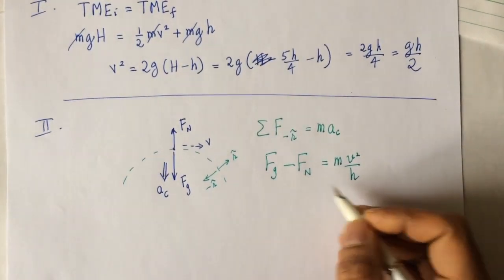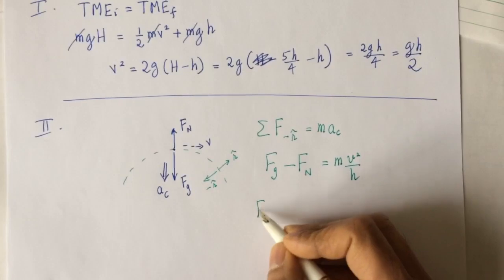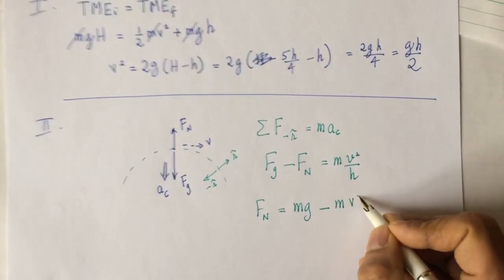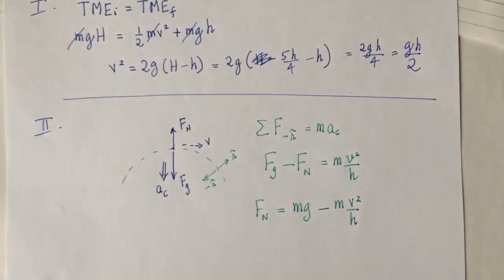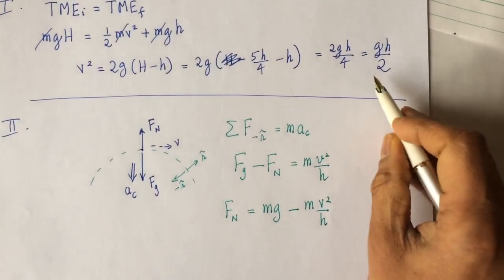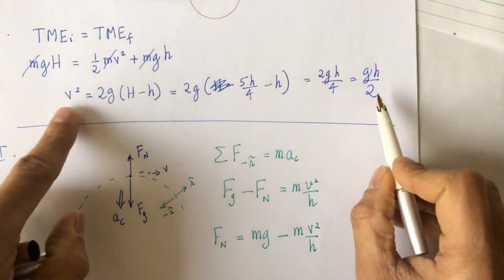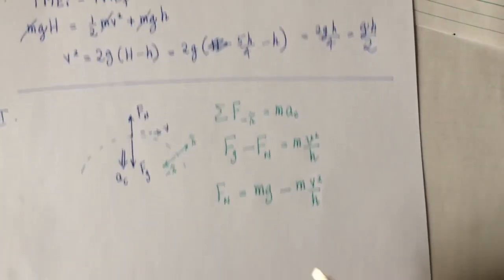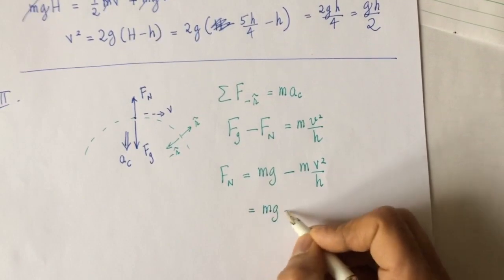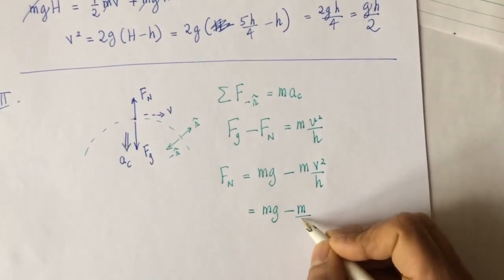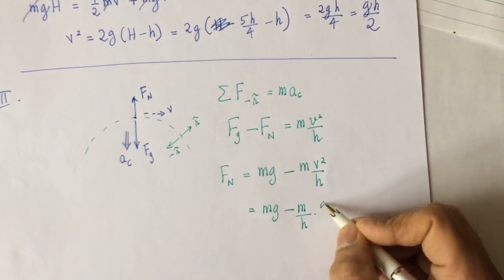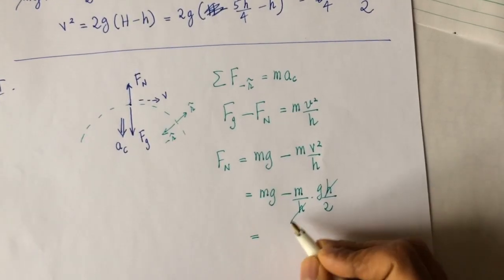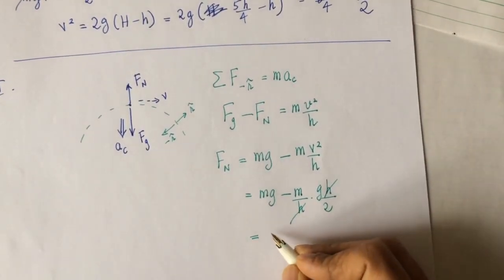Solving for the normal force: Fn equals Fg minus mv squared over h, which is mg minus m over h times v squared. Substituting v squared = gh/2, the h cancels out, giving mg minus half mg, which equals mg/2.